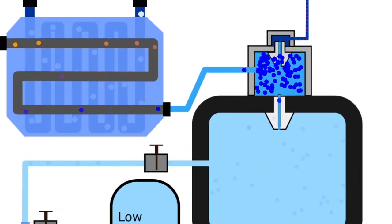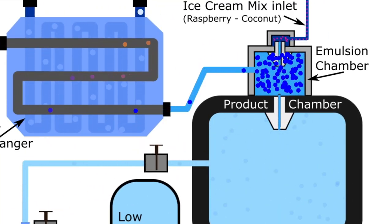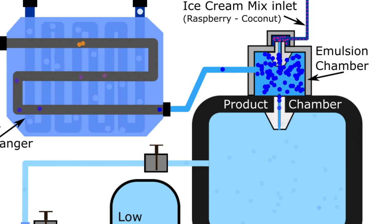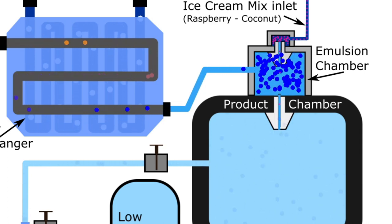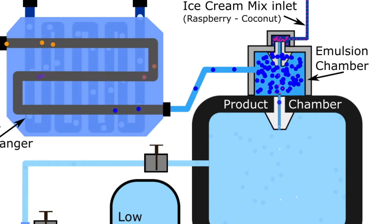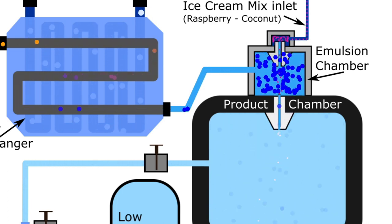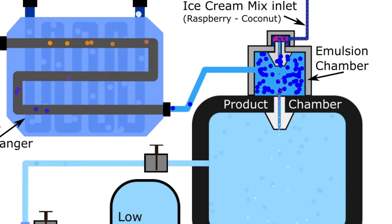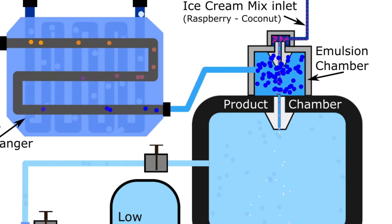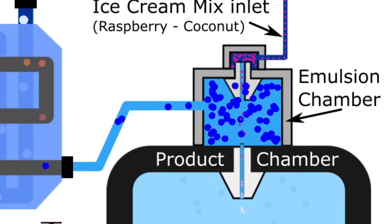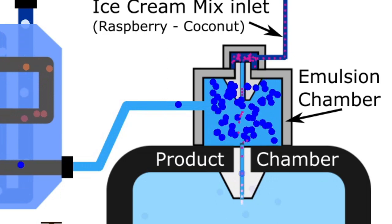Now we introduce the ice cream mix into the emulsion chamber as a fine mist via a nozzle. The emulsion chamber already contains cooled liquid CO2. So when the mist of ice cream mix is added, they form an emulsion. Hence the name of the chamber. An emulsion is basically a mixture of two or more liquids that normally don't mix.